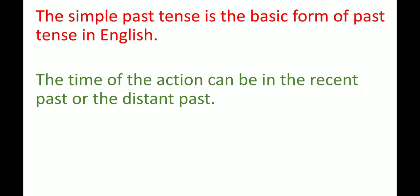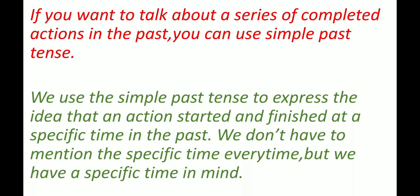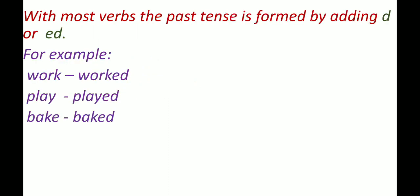The simple past tense is the basic form of past tense in English. The time of the action can be in the recent past or the distant past. If you want to talk about a series of completed actions in the past, you can use simple past tense. We use it to express the idea that an action started and finished at a specific time in the past. We don't have to mention the specific time every time, but we have a specific time in mind. For example: I played football. John went to the pub.